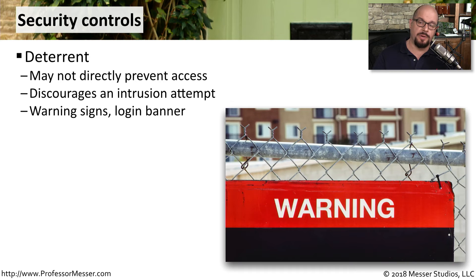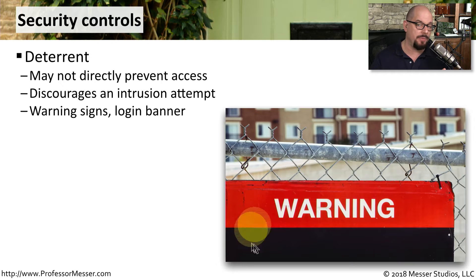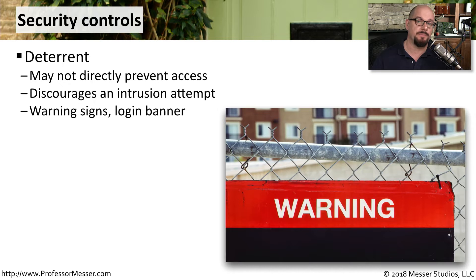One type of security control is a deterrent. This is a type of control that may not necessarily prevent someone from performing an attack, but it may give them a warning, such as a sign that you might put on a fence or a login banner that someone sees when they first connect to a system.